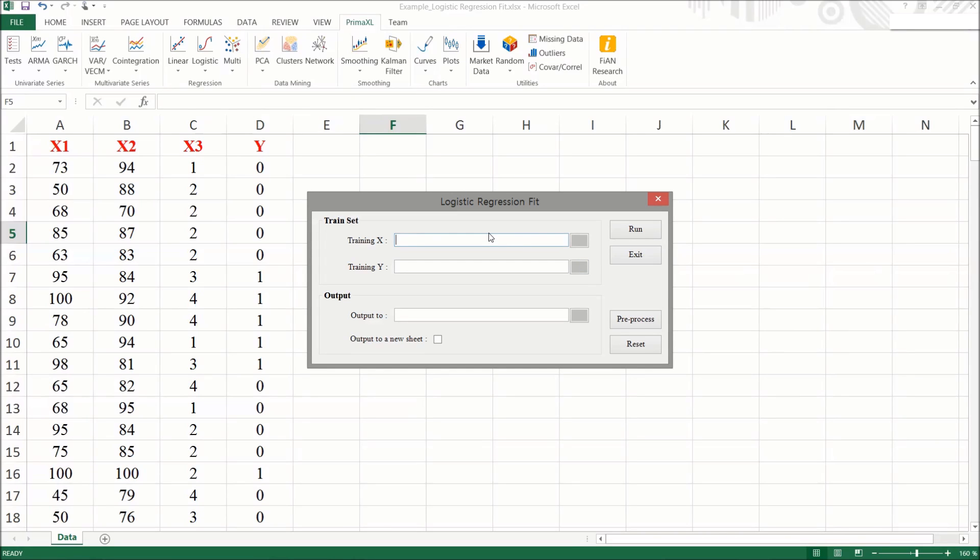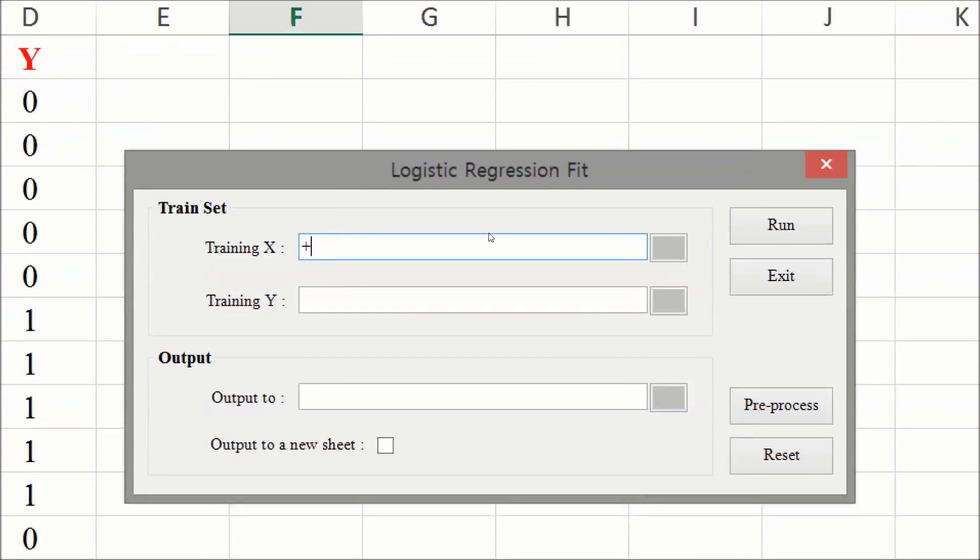This menu form is quite intuitive. We can fill it out starting from the top. At the topmost field, we should specify the data range of the independent variables. Next, we should specify the data range of the dependent variable y.